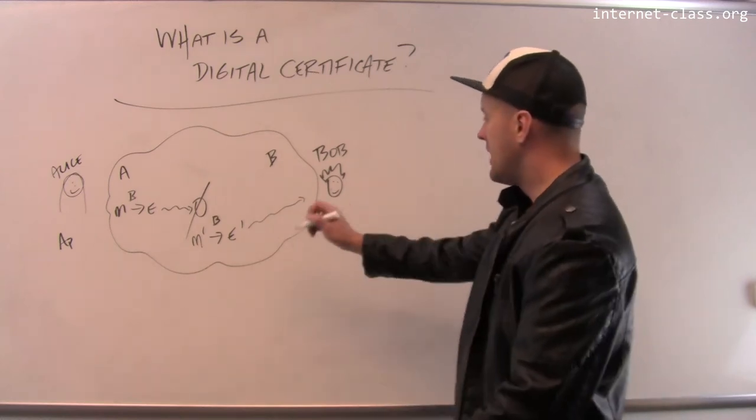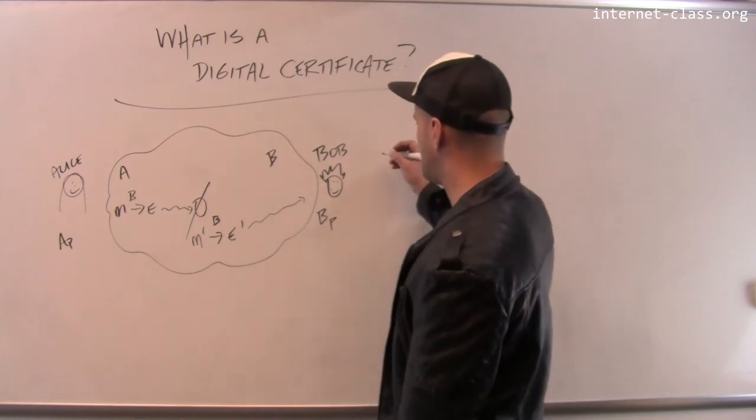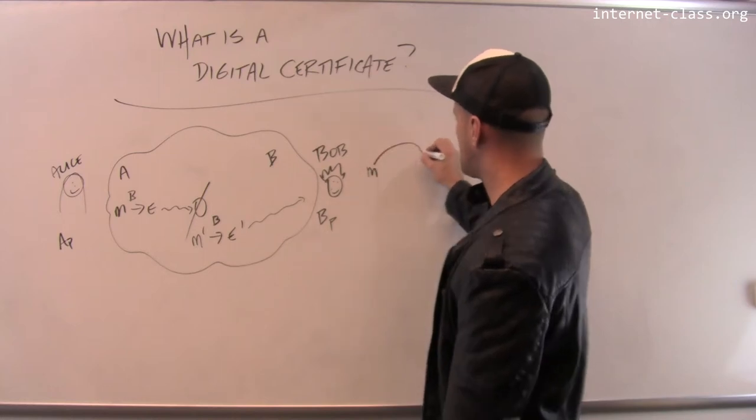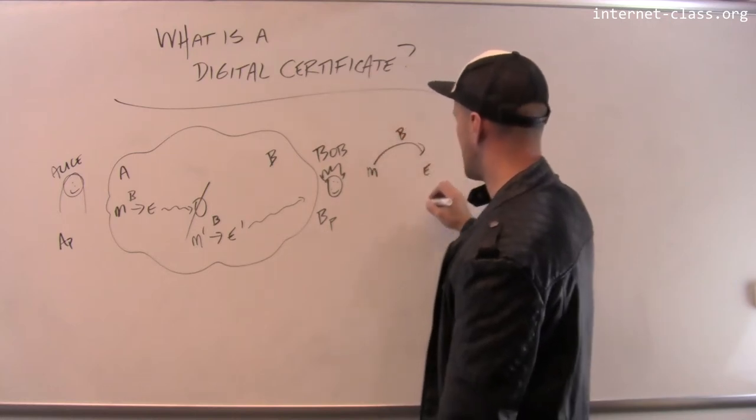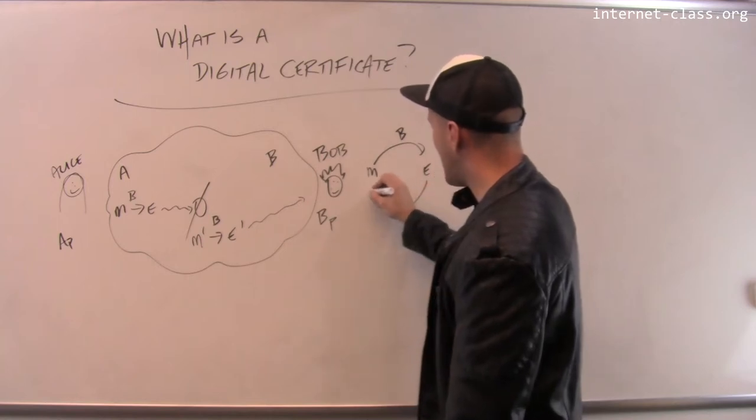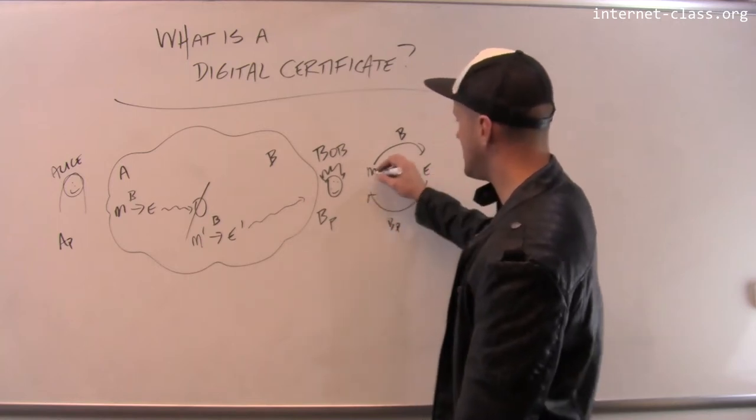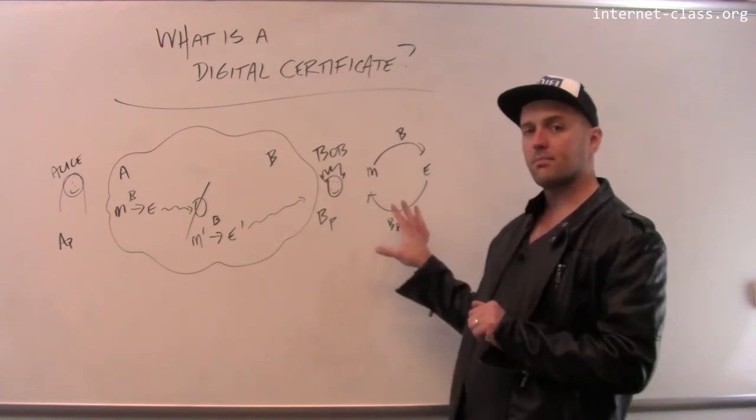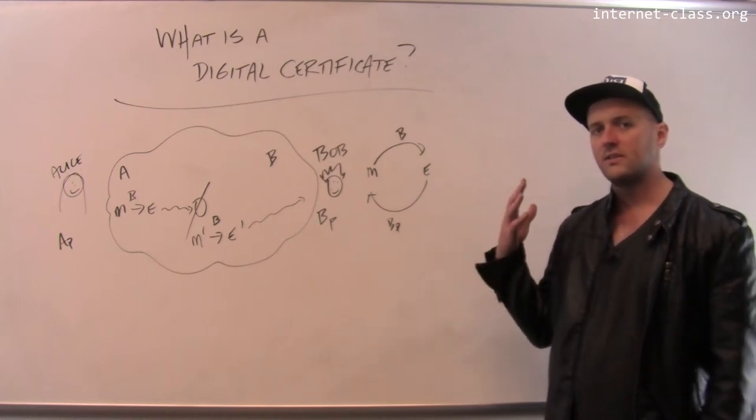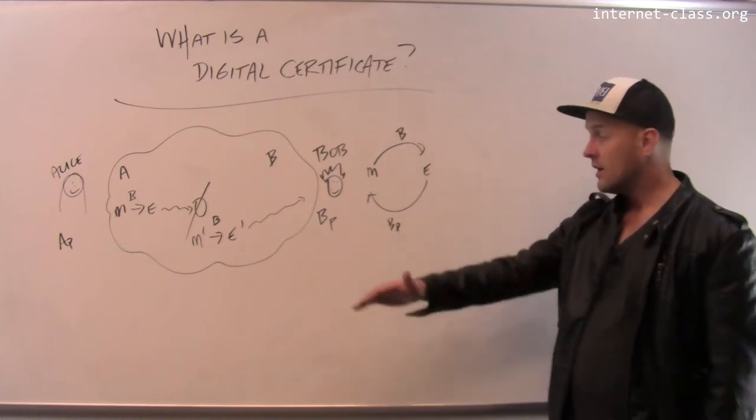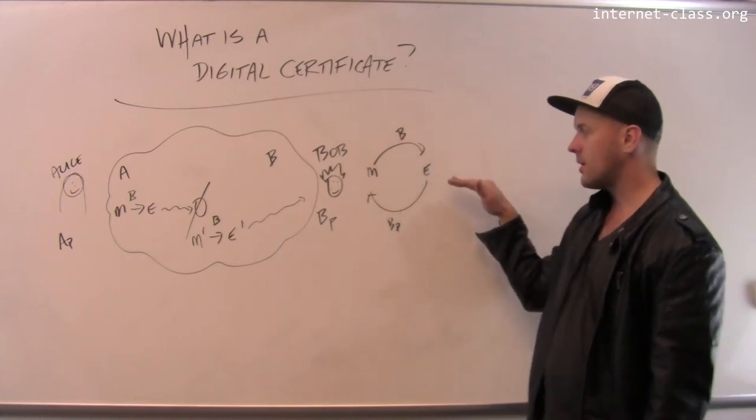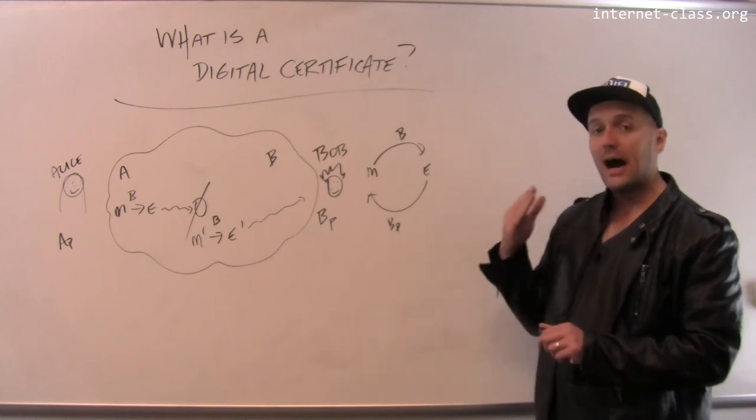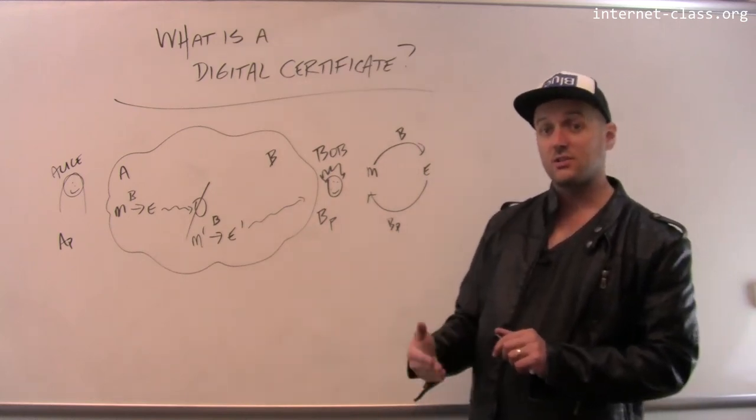So this is actually pretty cool. Remember, we have this idea of a trapdoor function. For example, in Bob's case, if I start with a message and encrypt it using Bob's public key to get the encrypted message, then only Bob, by using his private key, can decrypt the message and recover the original contents. But here's something important to notice: these are just transformations on the message contents. This is something that everybody can do, and this is something that only Bob can do, or only Alice can do if we're using Alice's keys.